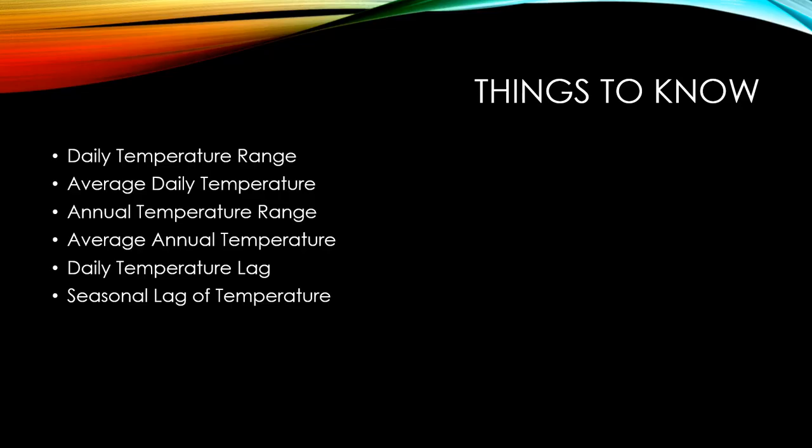Some things to know when it comes to temperature: there's the daily temperature range, which is the difference between the highest and lowest temperature over 24 hours. You have the average daily temperature, which is the sum of the highest and lowest temperatures of the day divided by 2. You have the annual temperature range, the difference between the highest and lowest monthly temperature for a place. And then the average annual temperature, which is the sum of the mean monthly temperatures divided by 12.